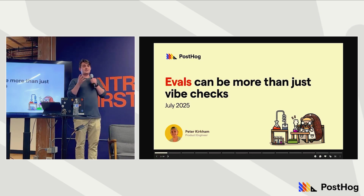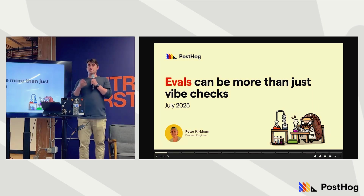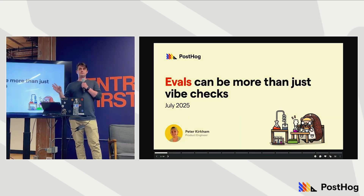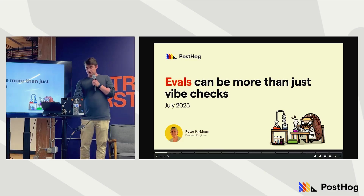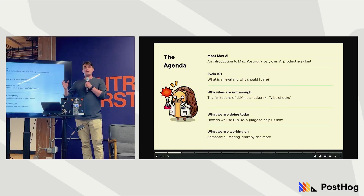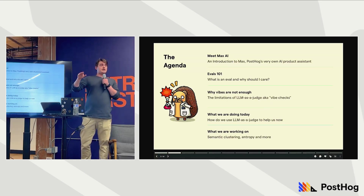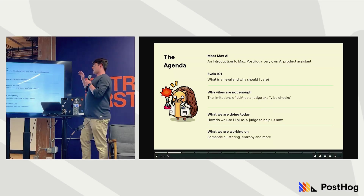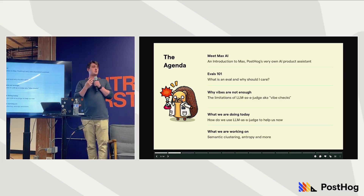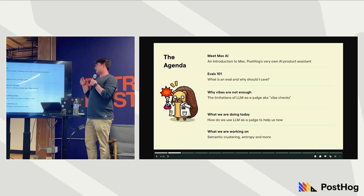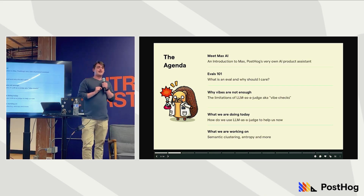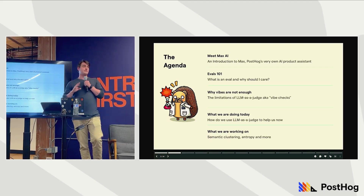That's not what I'm here to fully talk about today. I'm talking about what comes after observability, which is evals. I'm going to introduce you to Max, PostHog's very own AI assistant, go over evals quickly, tell you why the current state of evals isn't enough for us building Max, how we're using it, and a special teaser demo of something that may be coming in the future.